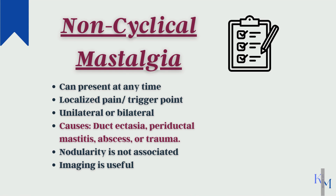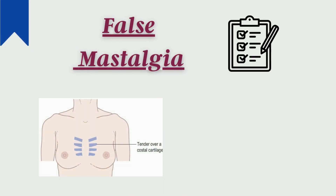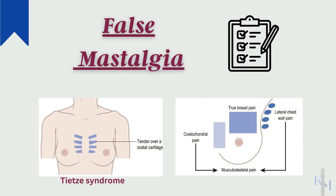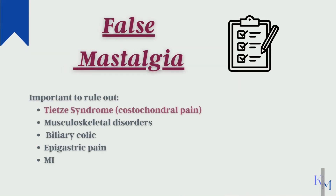False breast pain must be ruled out. In post-menopausal women, Tietze's syndrome may be the cause, in which there is costochondral pain along with pain in the lateral chest wall along the anterior axillary plane, and serratus anterior involvement is present. On examination, you can find two or three tender costochondral joints, as you can see in this picture. Other causes are biliary colic, or epigastric pain due to GERD or myocardial infarction.